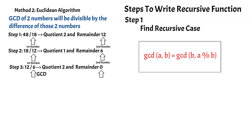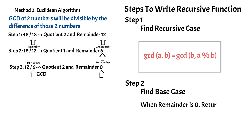If you notice in this algorithm, we also have our base case. Whenever the remainder reaches zero, then in that case we can return our value. Since we now have both the recursive case and the base case, let us move to the editor to write our recursive function.